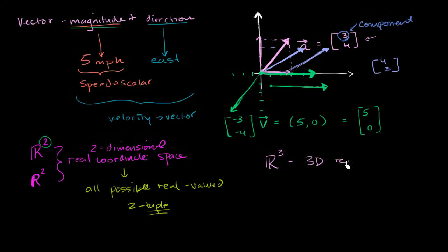So 3D real coordinate space. And so you would view this as all the possible real valued three-tuples. So real valued three-tuples. So for example, that would be a member of R³.